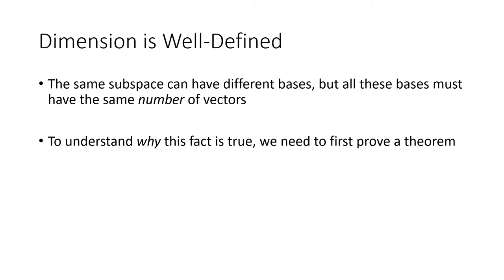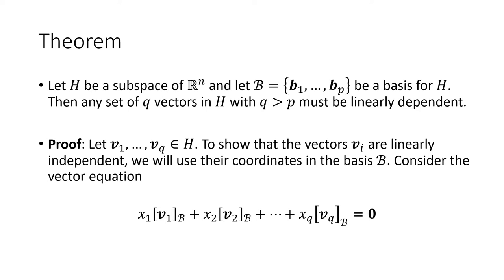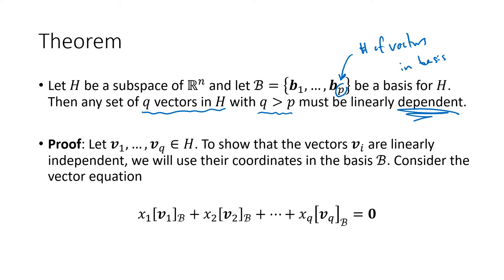Before we can prove that, we need to prove a helping theorem. If you have a subspace of R^n with a basis of p vectors, then any set of q vectors in h with q greater than p — meaning we have more vectors in this set than we do in the basis — that set of q vectors has to be linearly dependent. There has to be a dependence relation among those vectors.